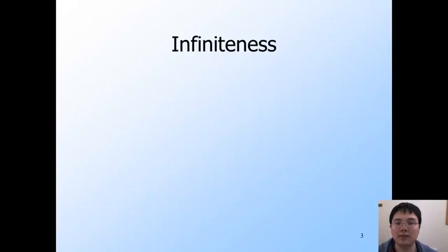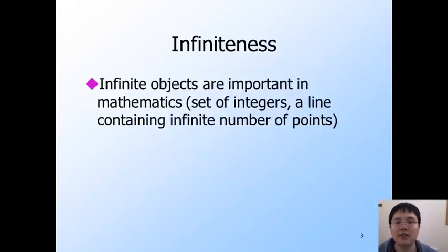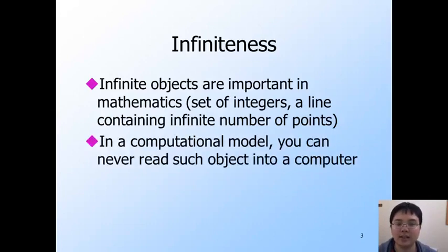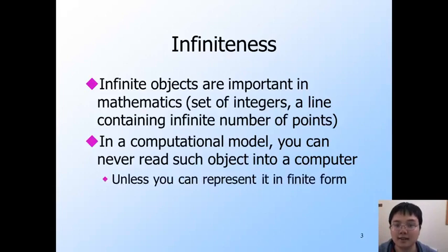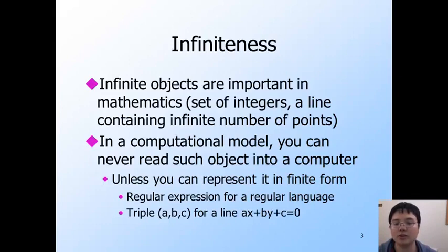Now we come into the topic of infiniteness. As we know, infinite objects are important in mathematics, like the set of integers or a line that contains an infinite number of points. Yet, in a computational model, a computer can never get an infinite input unless you can represent it in finite form. For example, we can represent a regular language with a regular expression which has finite length. We can also store three numbers as parameters for a line. In such cases, we extract important information that can represent the whole set. This concept is a bit like sufficient statistics, in case you have heard of it.